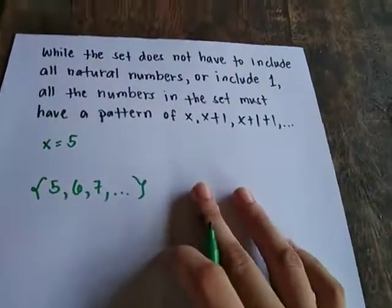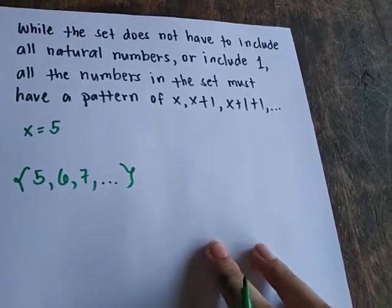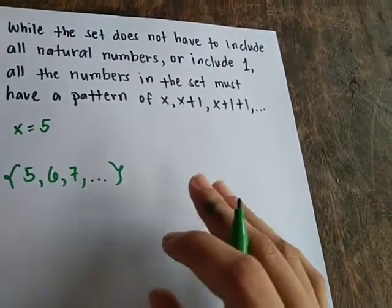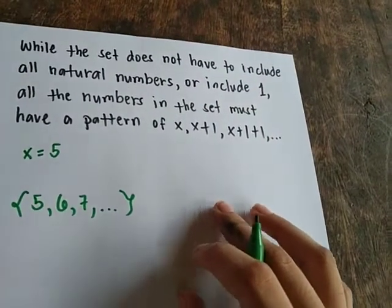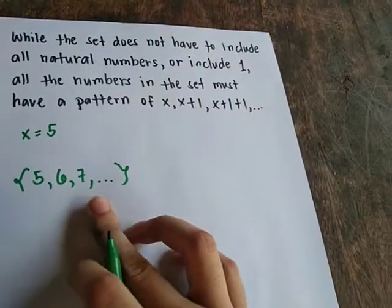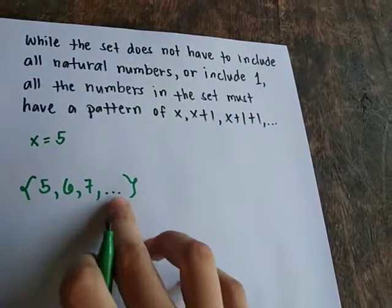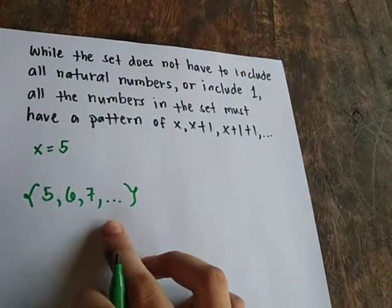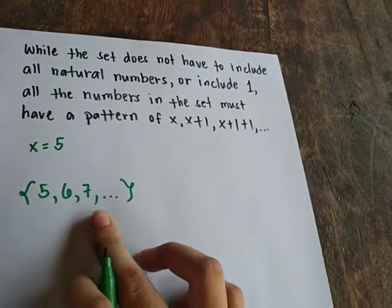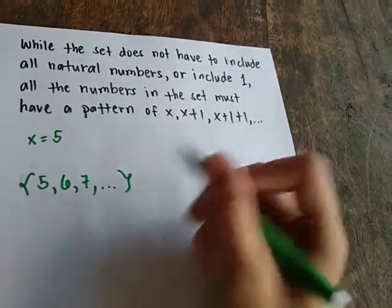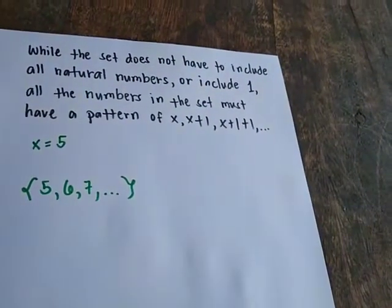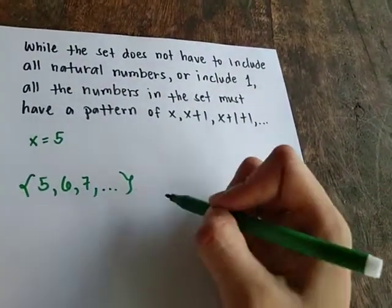In addition, an inductive set is infinite, or a continuous set. It means there is no particular ending. We frequently use three dots to indicate that there is more to follow — that there are still more numbers in the set. Now, let's determine if the following sets are inductive sets or not.